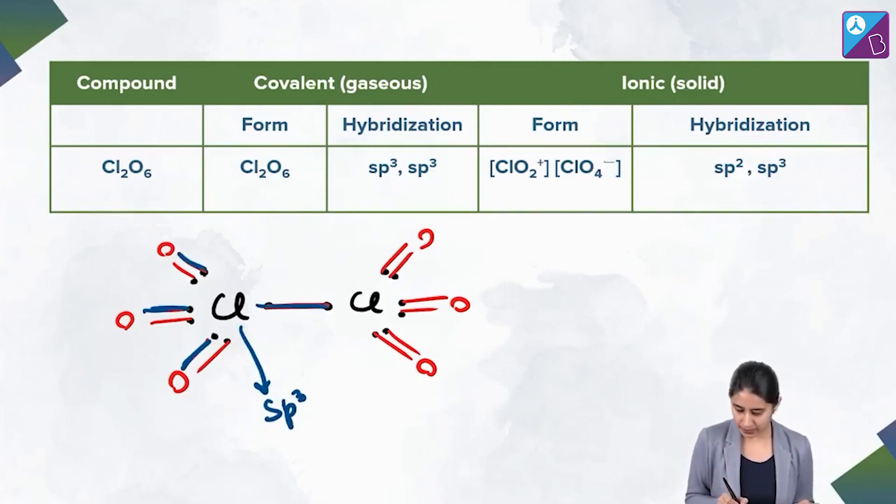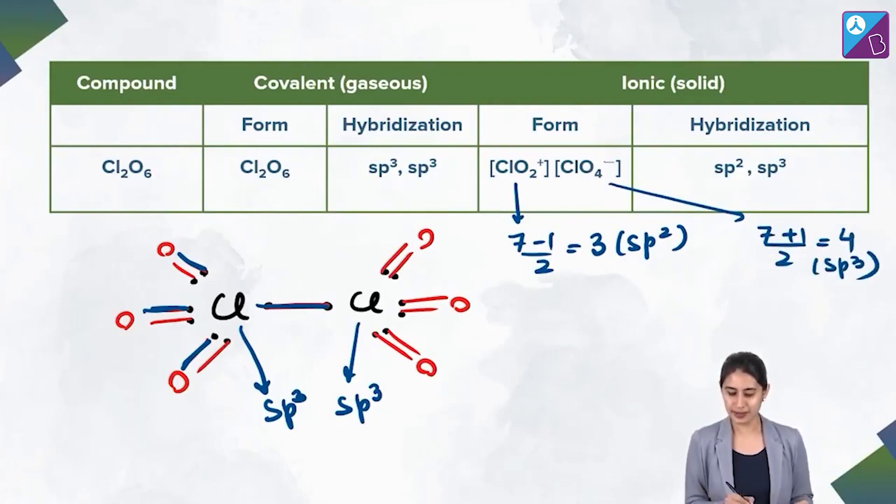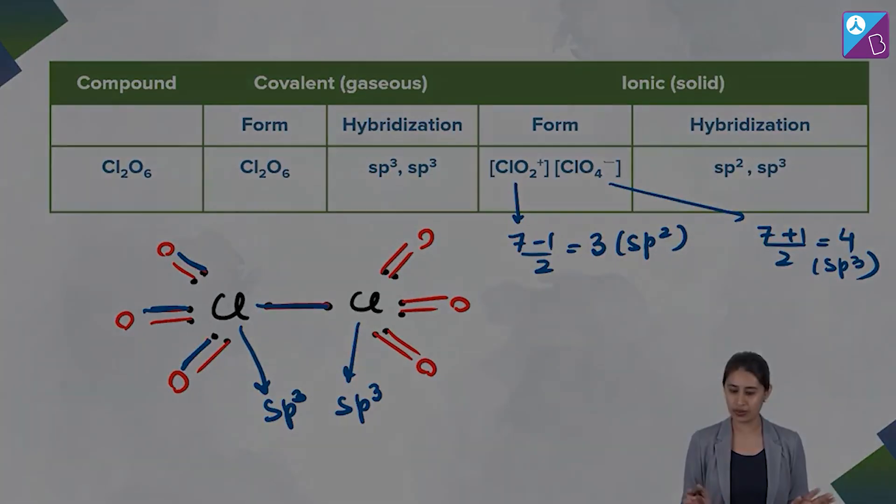But when we talk about the ionic state, it exists as ClO2+. That means 7 - 1/2, 7 - 1 is 6/2, that is 3, sp2 hybridized. ClO4-, again is 7 + 1/2, that means 8/2 is 4, that means sp3 hybridized. So how does it exist? sp2 hybridized and sp3 hybridized. ClO2- ClO2+ positively charged species and ClO4- negatively charged species, all right.